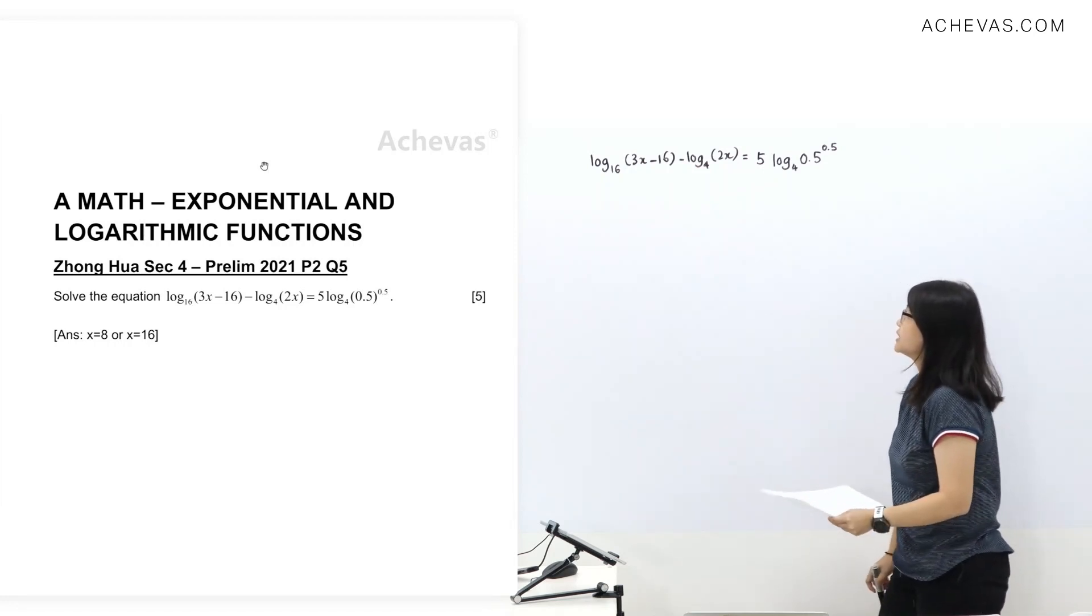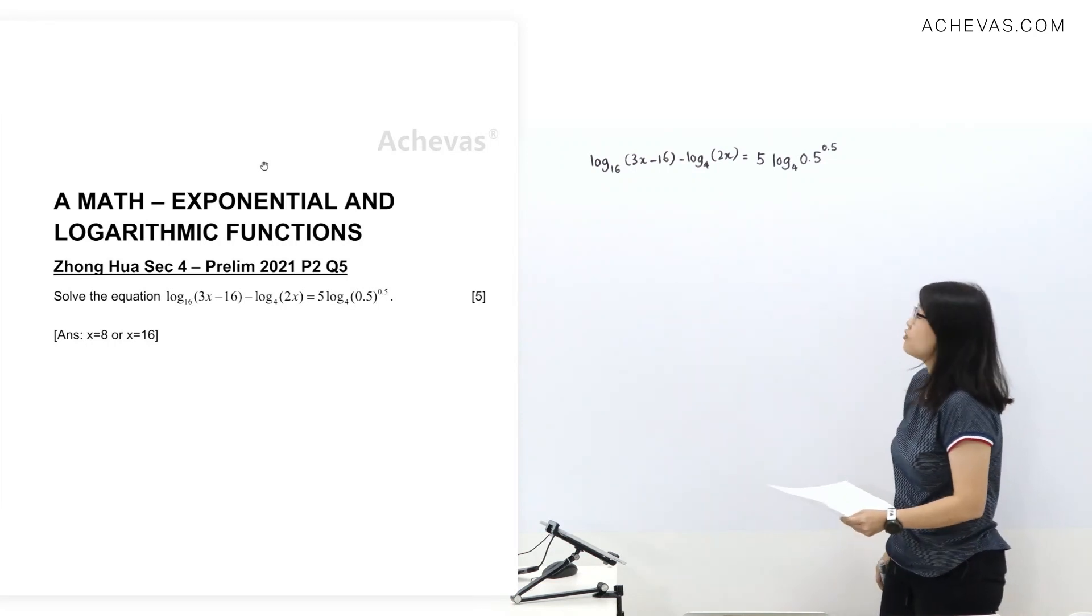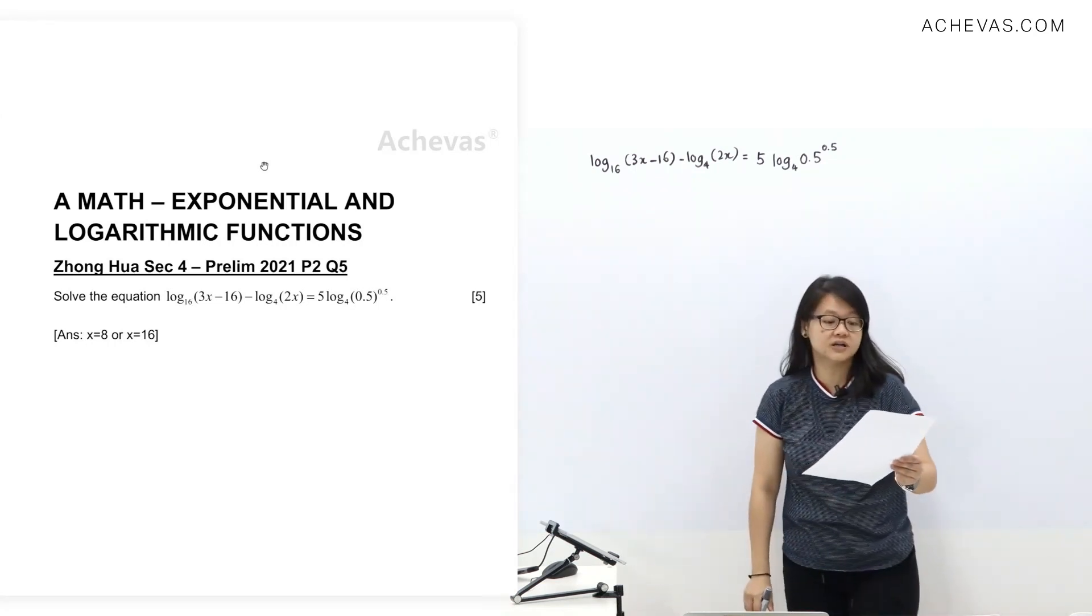Solve the equation: log base 16 of (3x minus 16) minus log base 4 of 2x equals 5 log base 4 of 0.5 raised to the power of 0.5.